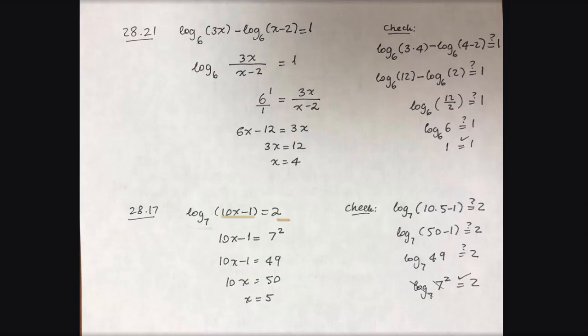So the base 7 raised to the power 2 equals 10x minus 1. This just now became a linear equation where 10x minus 1 equals 49. We can add 1 to both sides so that 10x equals 50 and divide by 10 to get x equals 5.